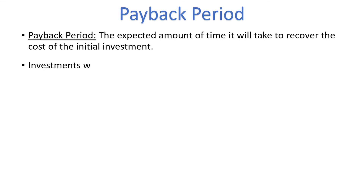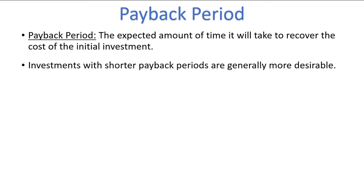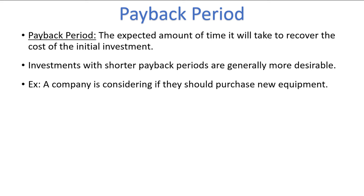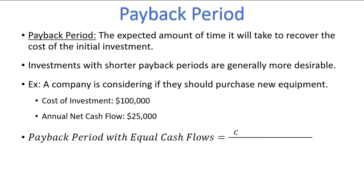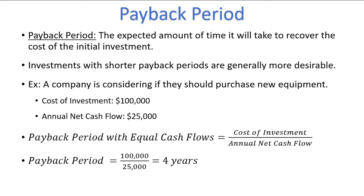Managers typically prefer investments that pay for themselves quickly, meaning a shorter payback period is preferred. Let's consider the simple case when an investment provides the same cash flow each year. Assume a company is considering purchasing a new piece of equipment. The price is $100,000 and is expected to bring $25,000 in annual net cash flow. Since the cash flow is a consistent $25,000 per year, we can calculate the payback period using the formula: payback period equals cost of the initial investment divided by the annual net cash flows. For our example, $100,000 divided by $25,000 equals 4 years. It will take 4 years for the cash flows to pay back the initial investment.